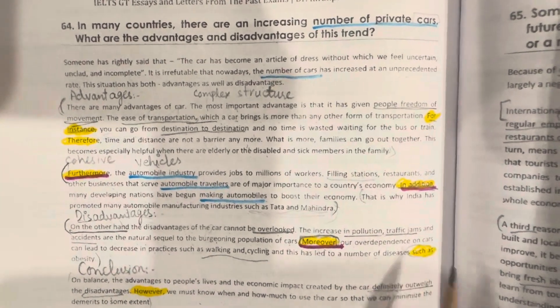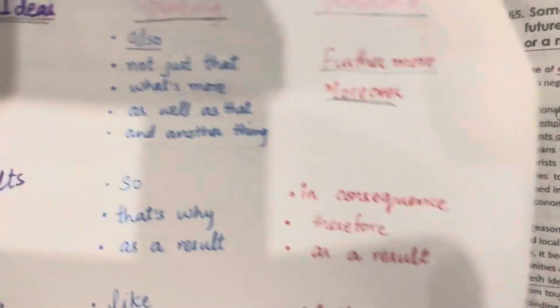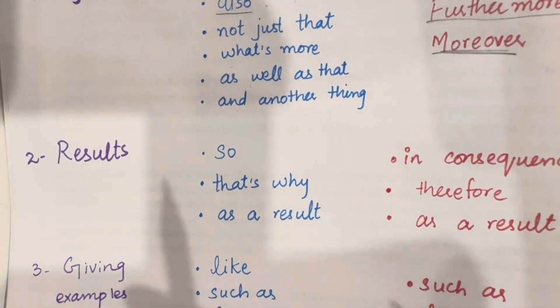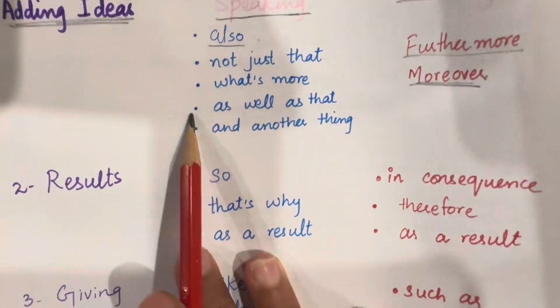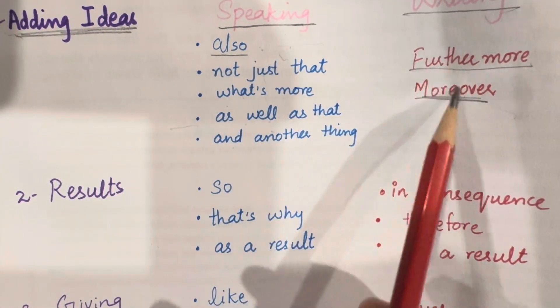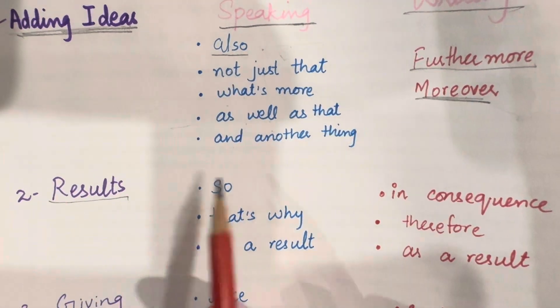I have colored this. Here, we will see this next because we will discuss this too. This is also a linking word. So, we have seen this - adding ideas. We can use these words for adding ideas, and for writing we can use these results for speaking.